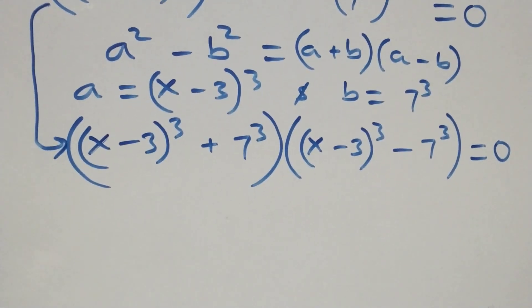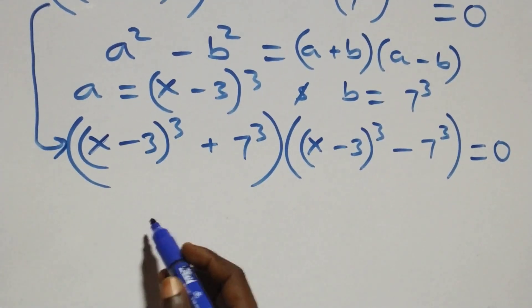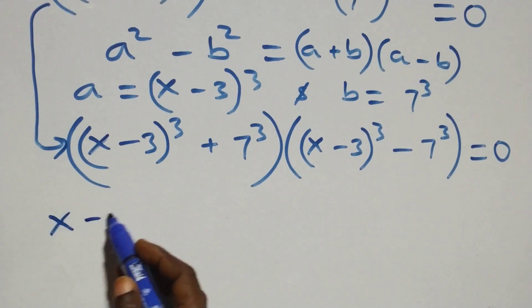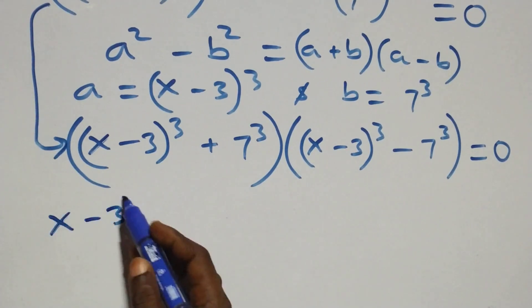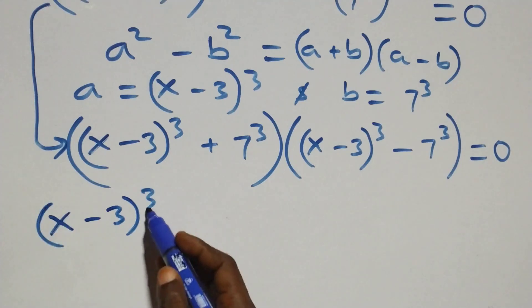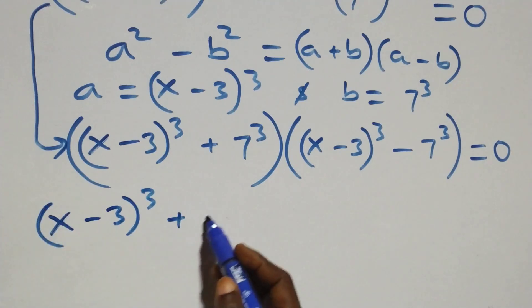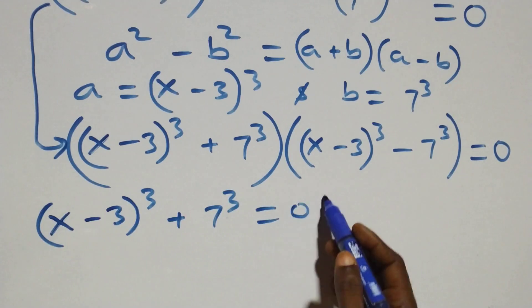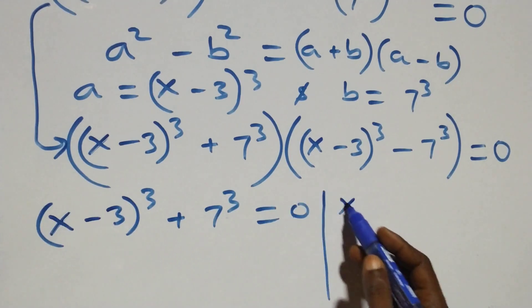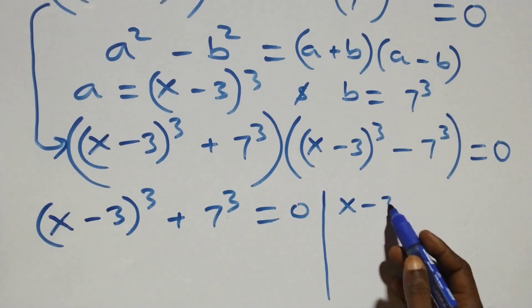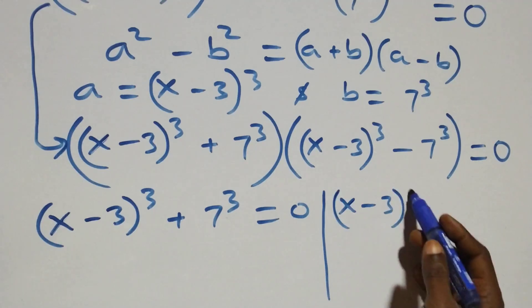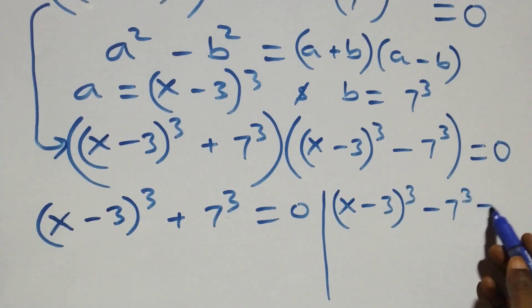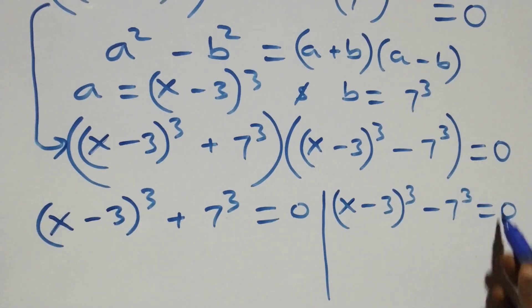We now have two possible cases. The first case: (x minus 3)^3 plus 7^3 equals 0. The second case: (x minus 3)^3 minus 7^3 equals 0.